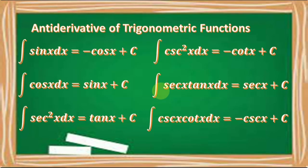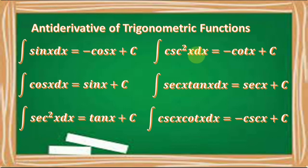Let's now discuss the antiderivative of trigonometric functions. The integral of sine x dx is equal to negative cosine x plus C. The integral of cosine x dx is equal to sine x plus C. The integral of secant squared x dx is equal to tangent x plus C. The integral of cosecant squared x dx is equal to negative cotangent x plus C. The integral of secant x times tangent x dx is equal to secant x plus C. The integral of cosecant x times cotangent x dx is equal to negative cosecant x plus C.